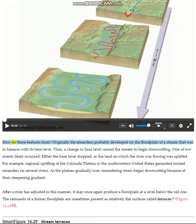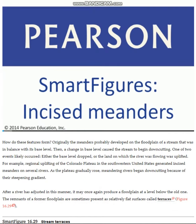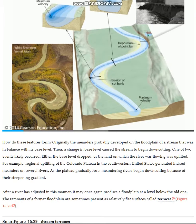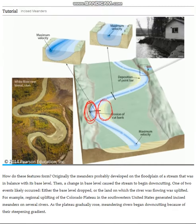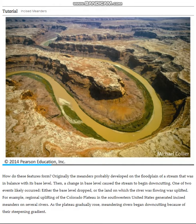Hello, this is Callan Bentley. Welcome back for another Smart Figure. After watching this video, you should be able to describe what processes would have had to take place to produce an incised meander. In a previous Smart Figure video, we talked about meandering — as river currents make their way around curves in the stream, the strongest part of the current gets deflected towards the edge, generating erosion at the cut bank and deposition at the point bar. However, sometimes we see meandering streams that are locked at the bottom of a deep canyon. The meander is no longer moving side to side; instead, it seems locked in place by being incised into bedrock. So we call these incised meanders.